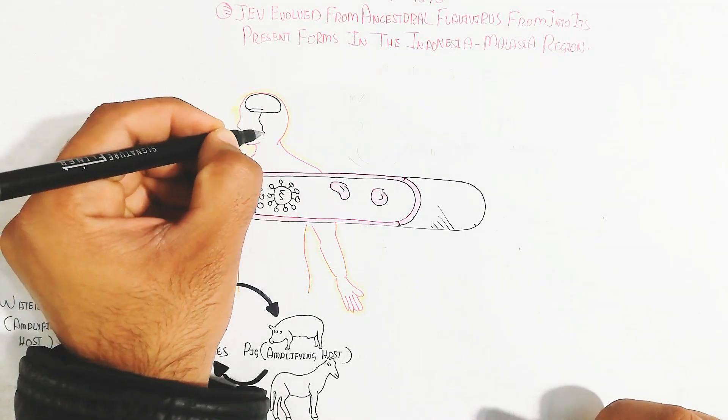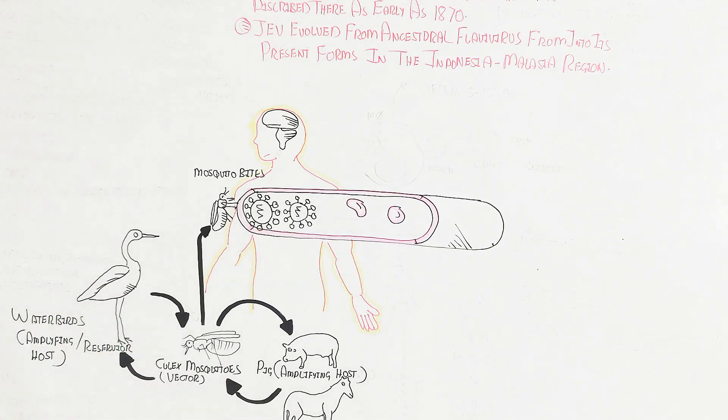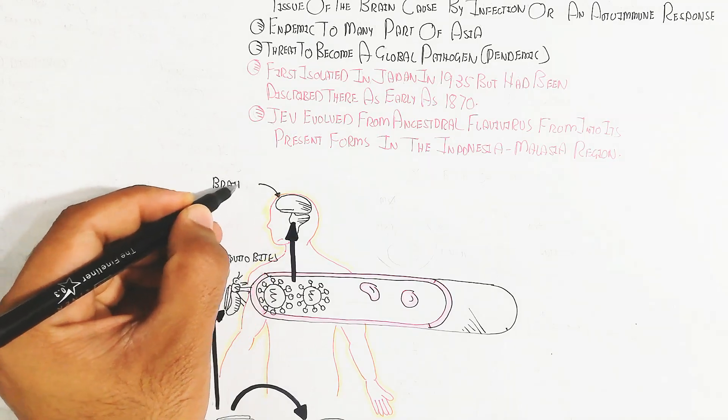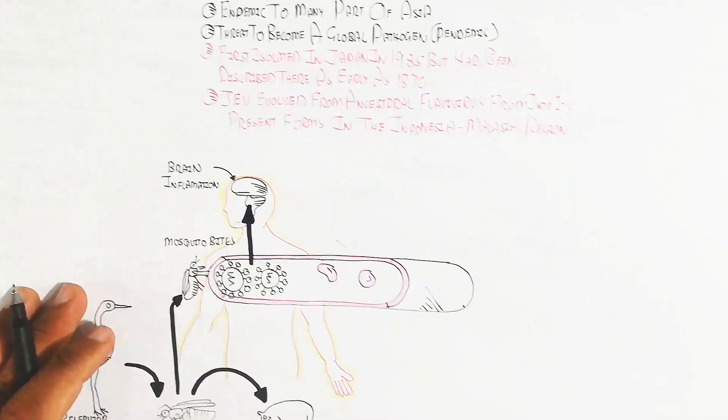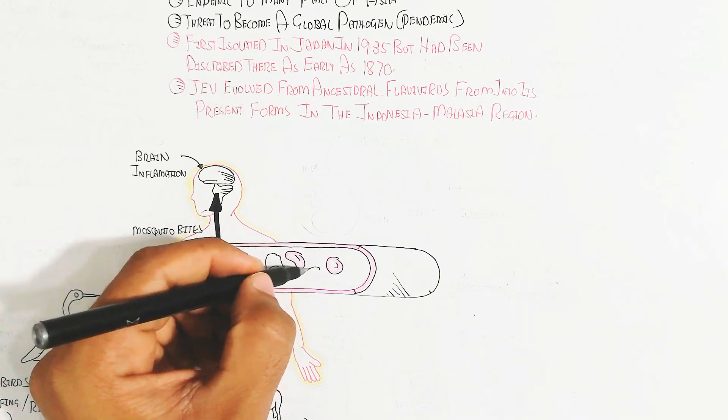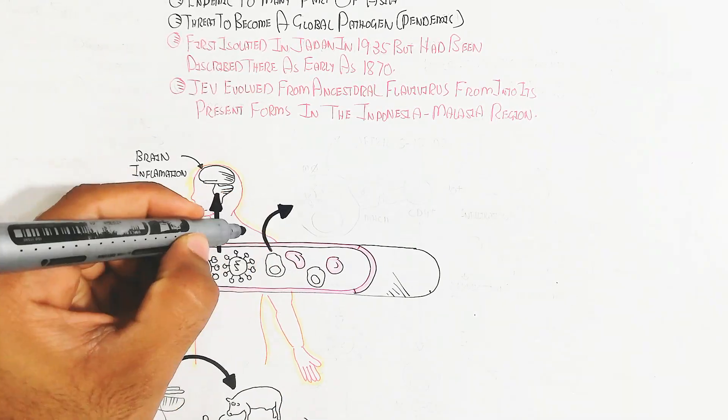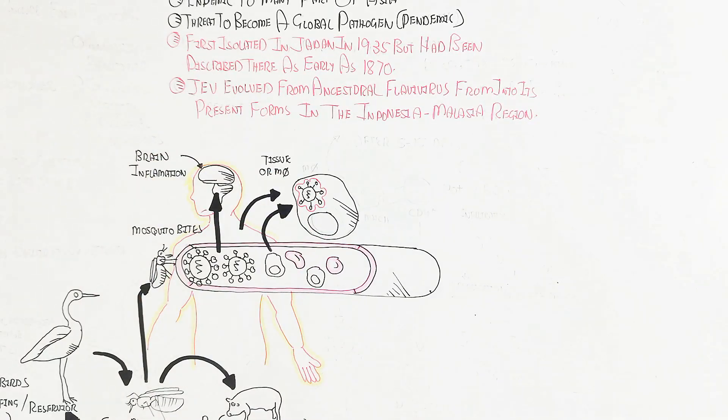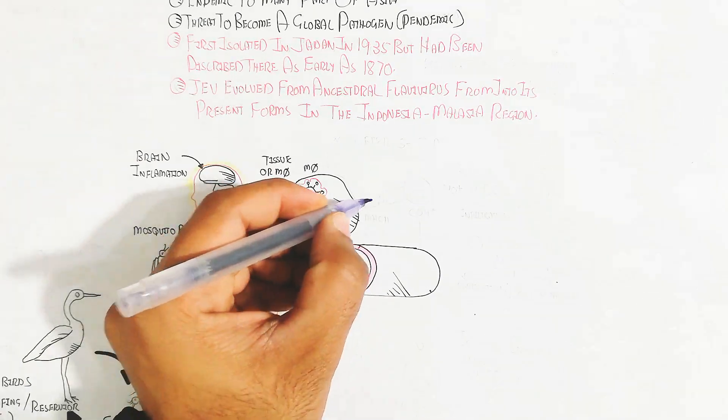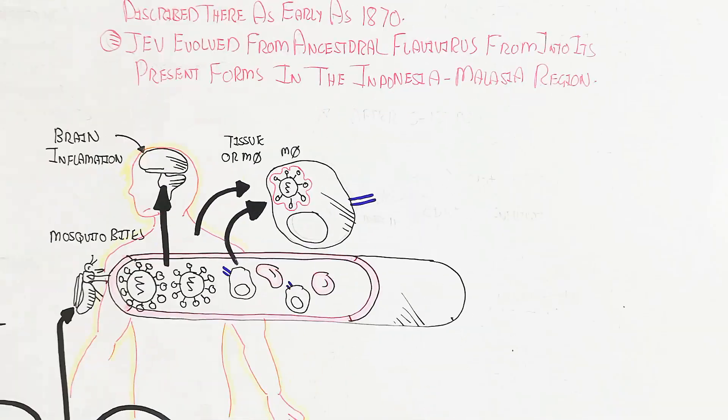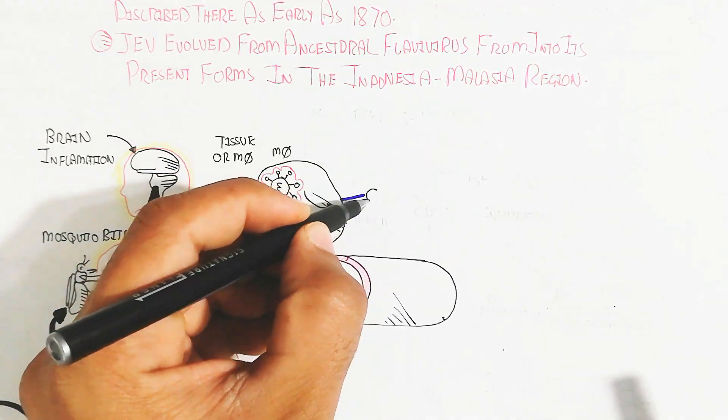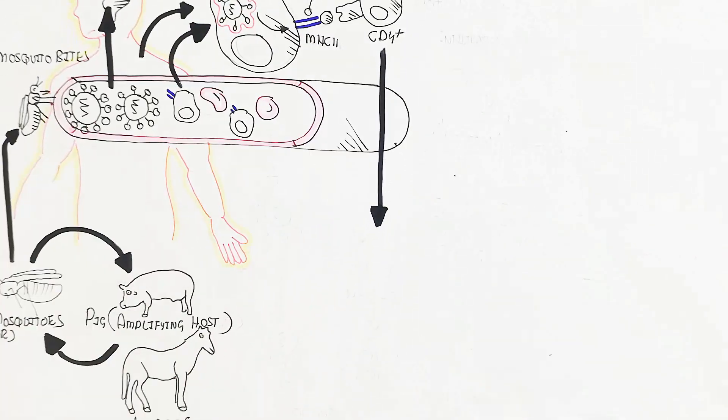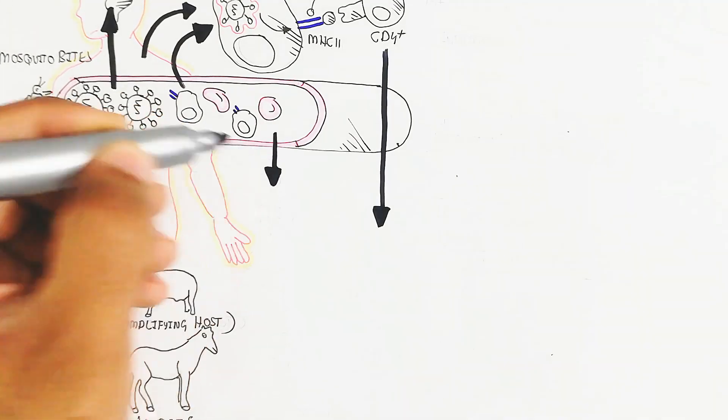When the infected Culex mosquito vector bites a human, the virus enters the blood circulatory system. If antibodies are not prepared and the immune system is not active, it will enter the brain. Tissue macrophages that engulf the bacteria produce cytokines and inflammatory mediators, recruiting through MHC class 2 molecules to CD4 T lymphocytes to recognize the antigen.